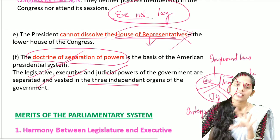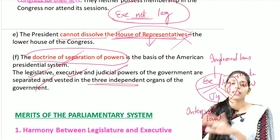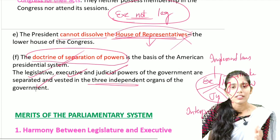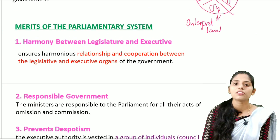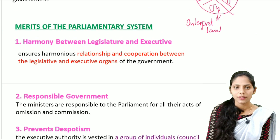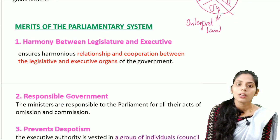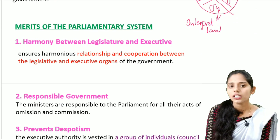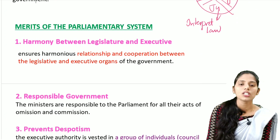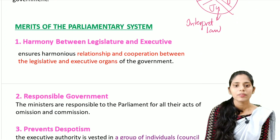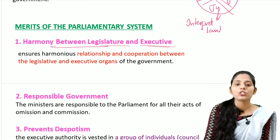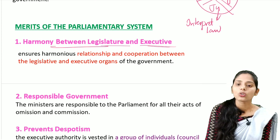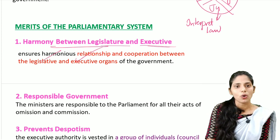Now let us see the merits and demerits of the parliamentary system. The first merit is harmony between the legislature and the executive. There is harmony because the executive is responsible to the legislature according to Article 75 of the Constitution, which says the union of ministers are collectively responsible to the parliament. This ensures cooperation between the legislature and the executive organs of the government.